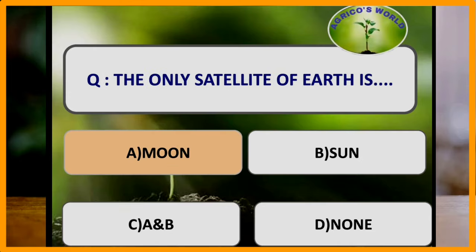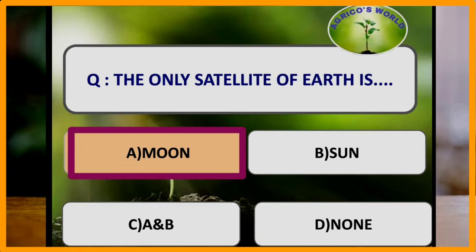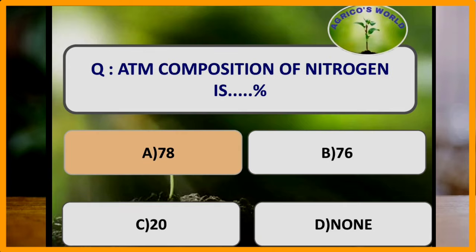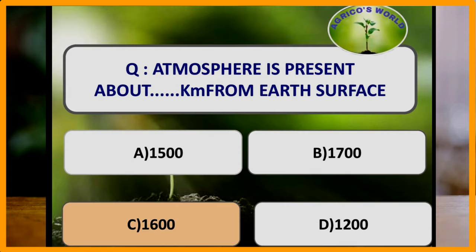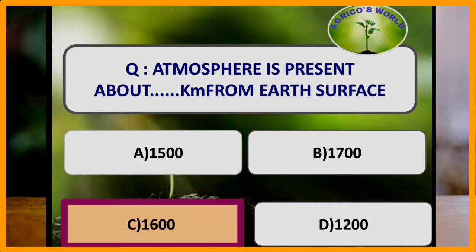The only satellite of earth is moon. Atmospheric composition of nitrogen is how much percentage? Atmospheric composition of nitrogen is 78% while that of oxygen is 21%. The atmosphere is present at about 1600 kilometers from the earth's surface.